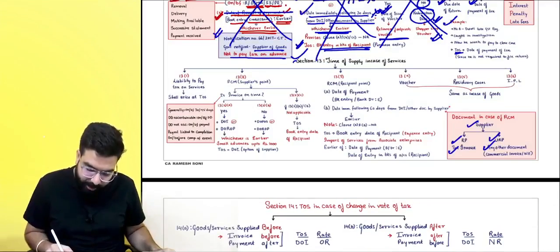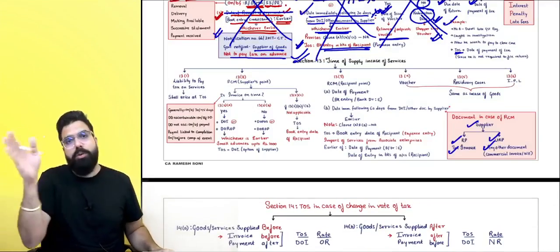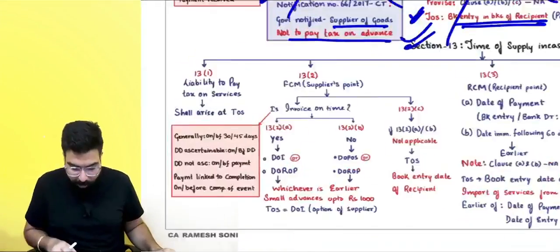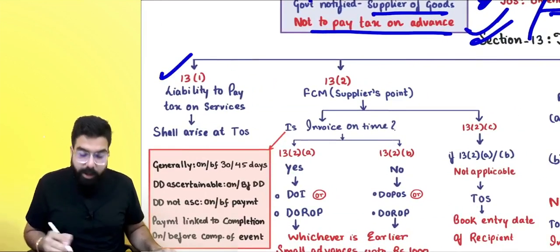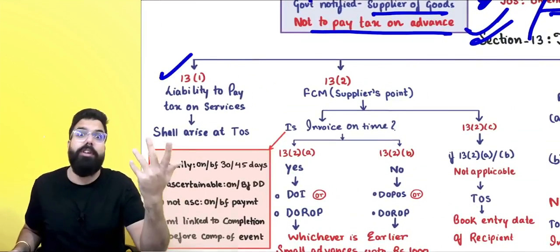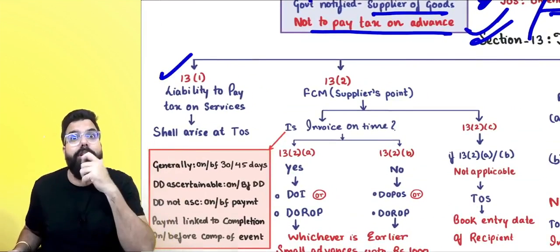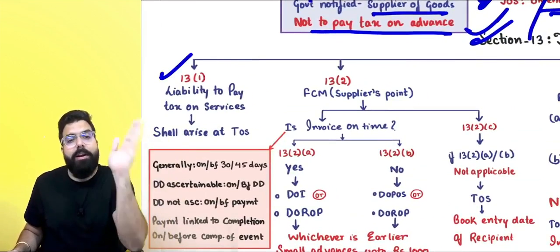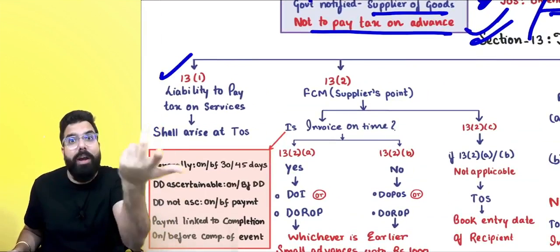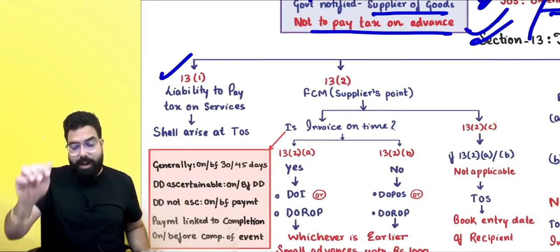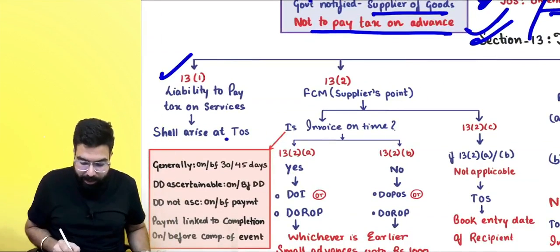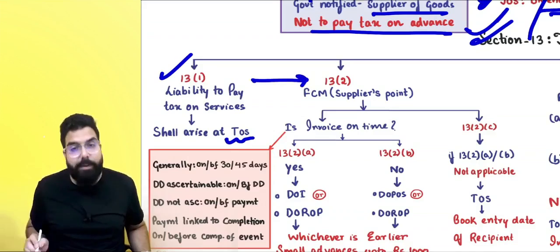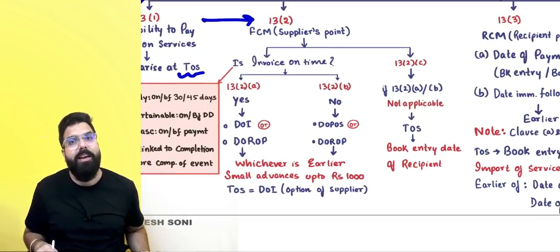Section 13 mirrors the structure of Section 12 with sub-sections 1 through 6. Section 13.1 states that in case of services, the liability comes at the time of supply. Let us determine the time of supply for services.